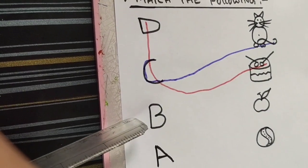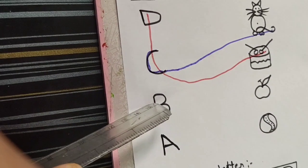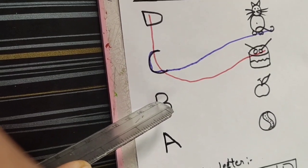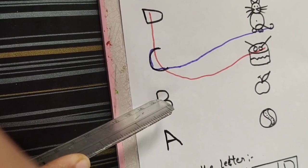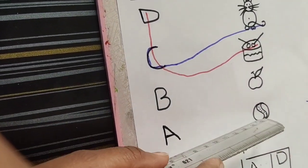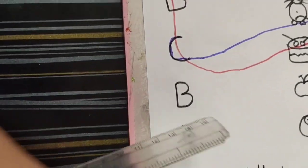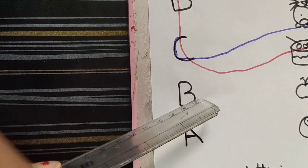Which letter is this? D. Which letter is this? B. B for? Banana. And which picture here is B for? What is this? Ball. This is? Ball. Match it with B.